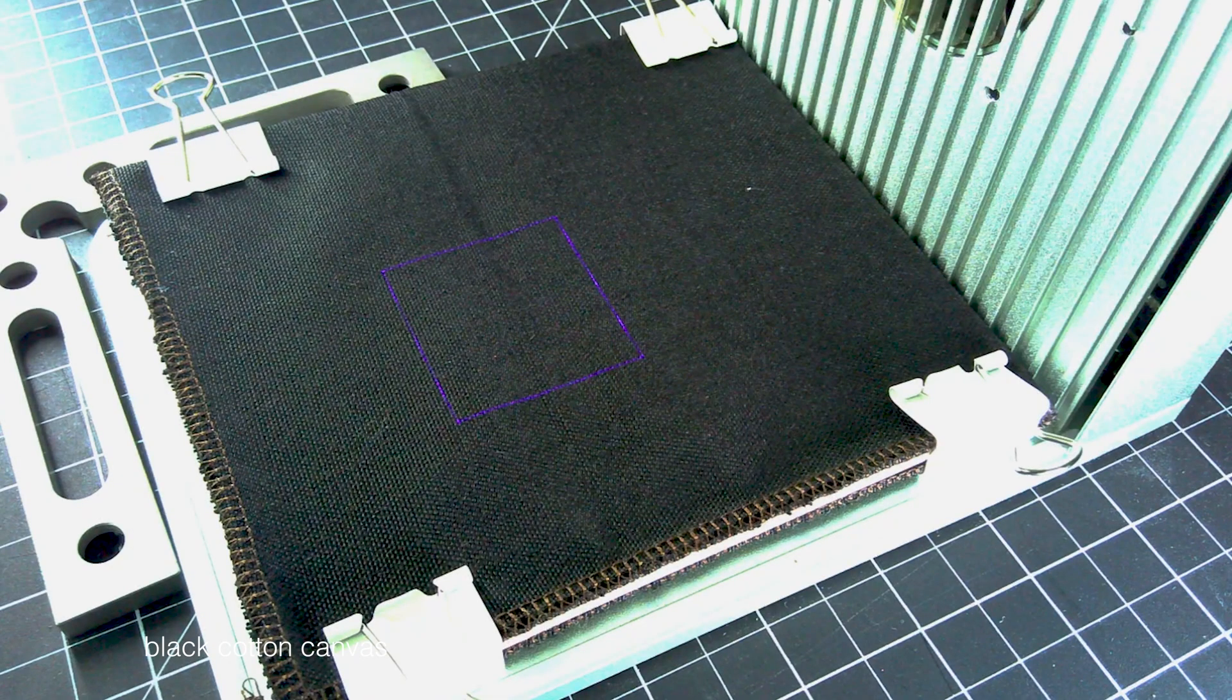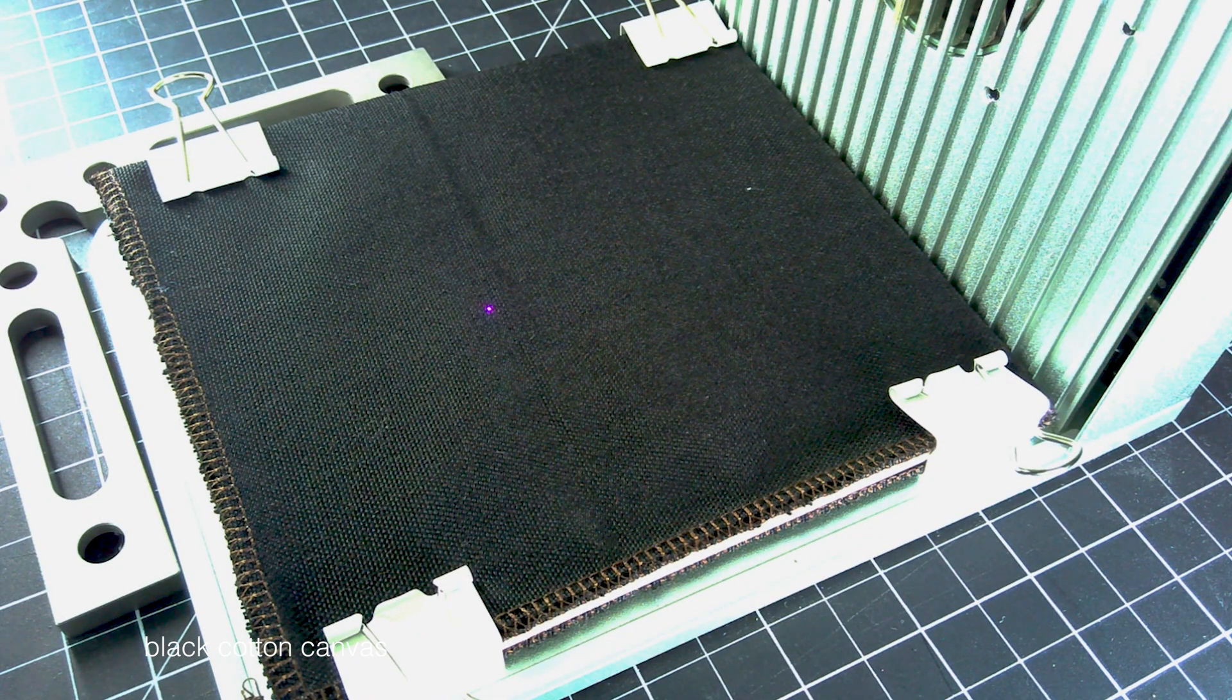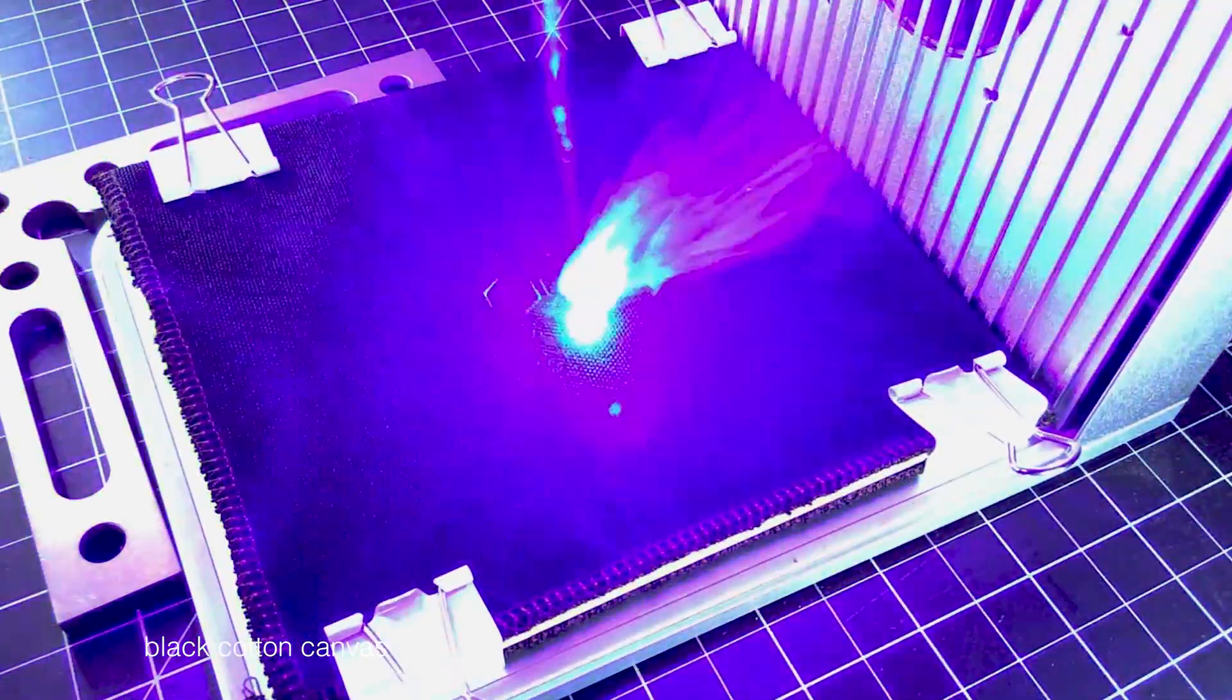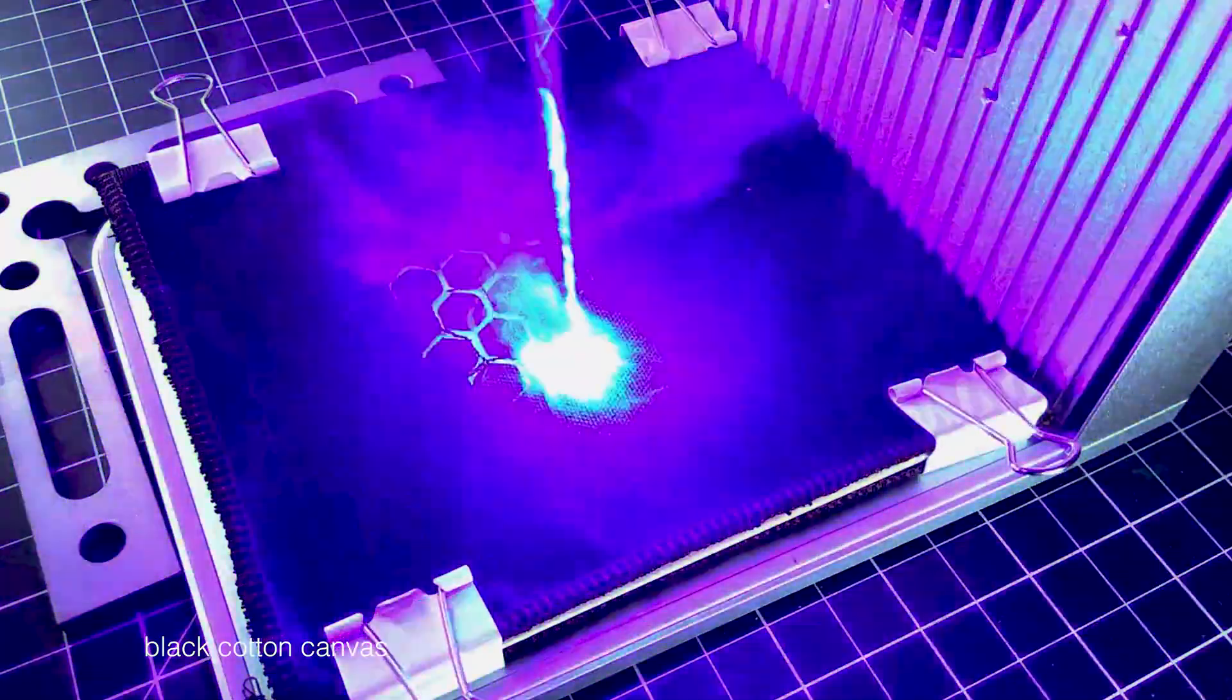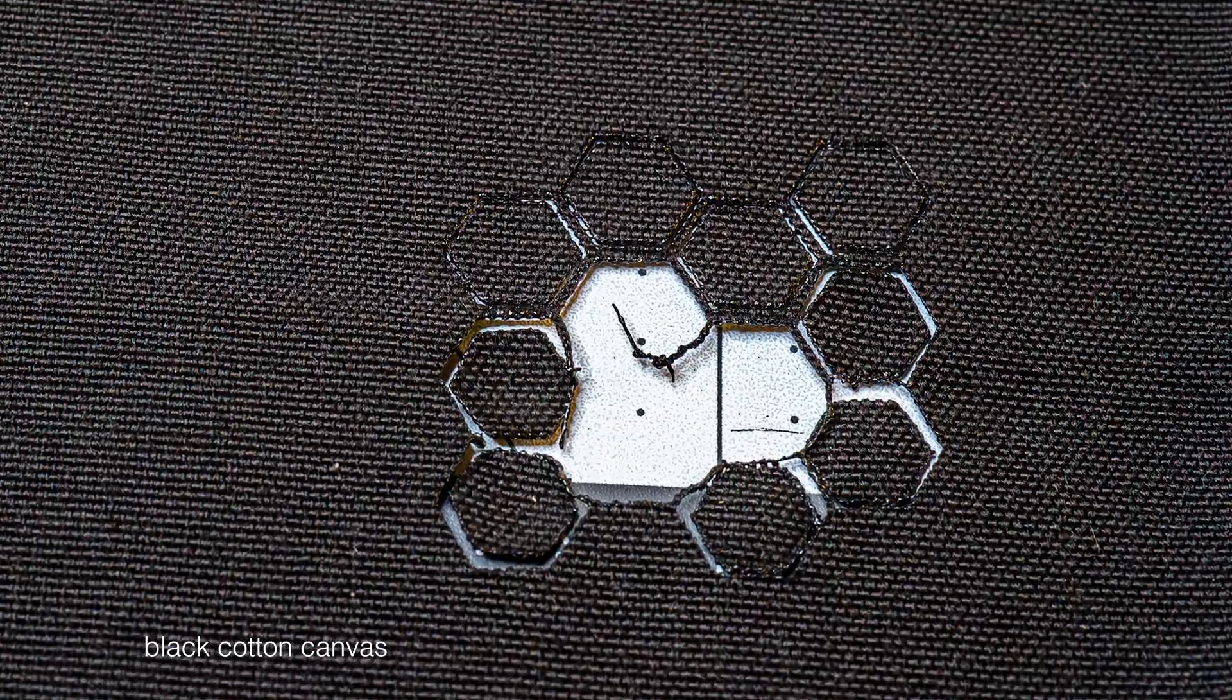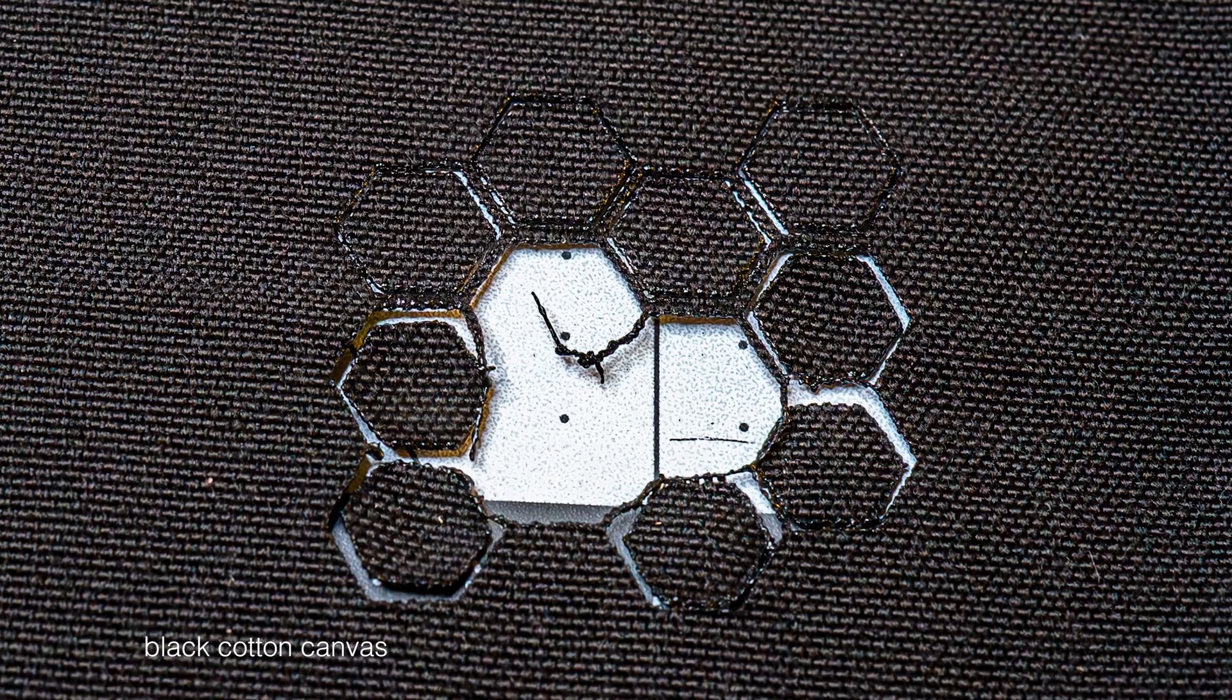At 100% power with speed set at 100 millimeters per second, the blue diode laser almost melts a line consistently enough to fully cut through. We'd recommend a second pass at a lower power or faster setting to prevent excessive melting or expansion of the burn area.